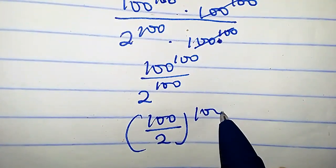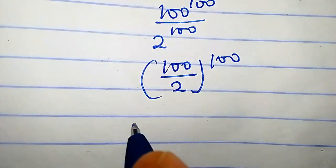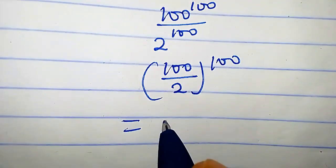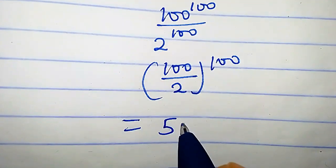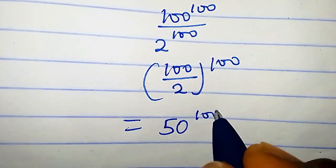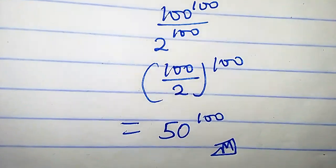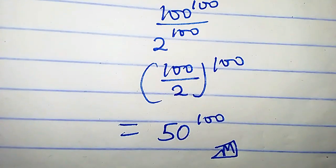This can also be written as (100 over 2) raised to the power 100, which equals 50 raised to the power 100. So this is the required solution for this problem.